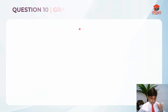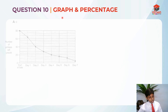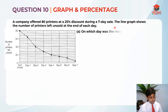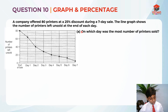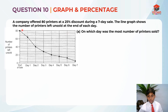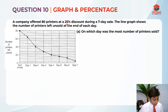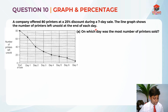So this is question 10. This question is testing us on graphs and percentages. It has 3 parts — part A, B, and C. I'll be doing part A now and B and C later in this video. A company offered 80 printers at a 25% discount during a 7-day sale. The line graph shows the number of printers left unsold at the end of each day.